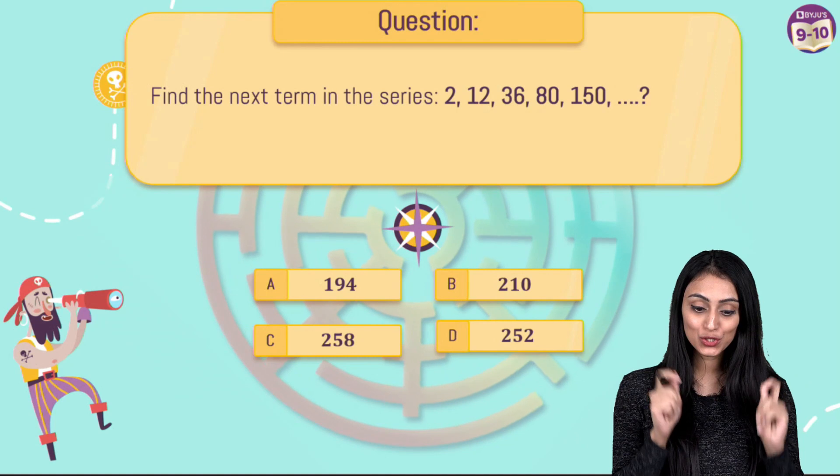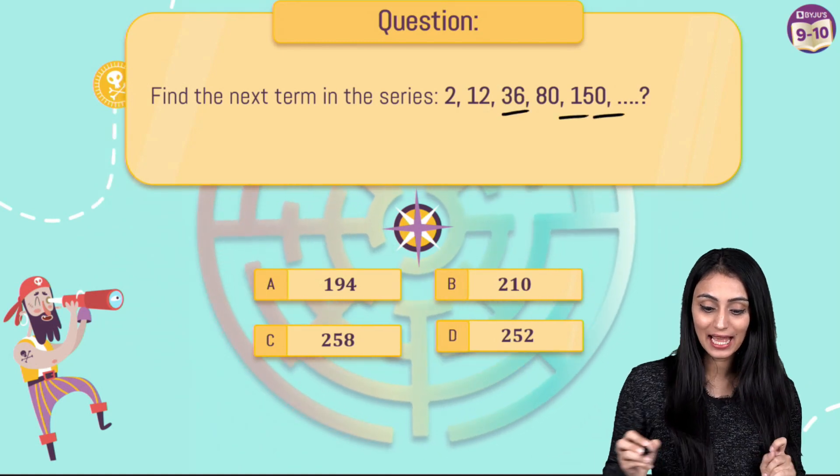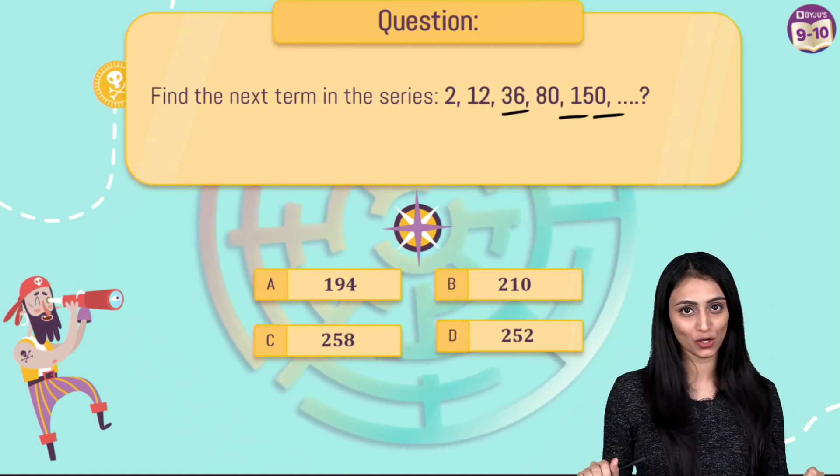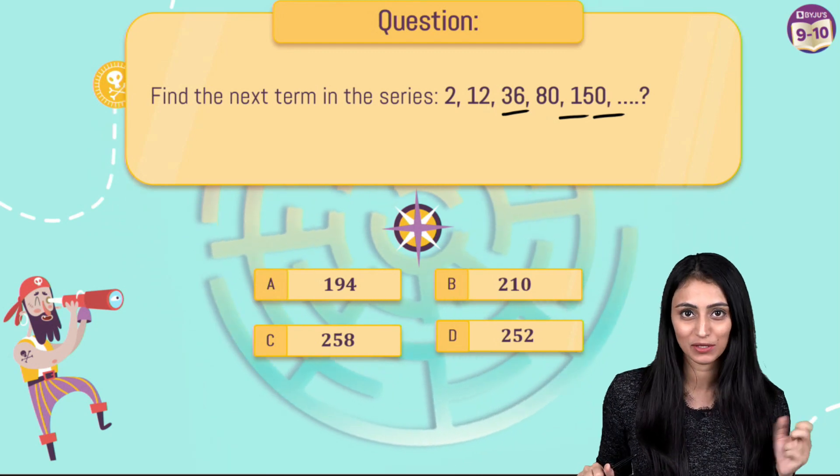Find the next term in the series 2, 12, 36, 80 and 150. You can see four options on the screen. What do you think would the right answer be for this question?